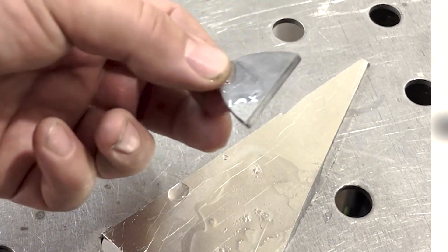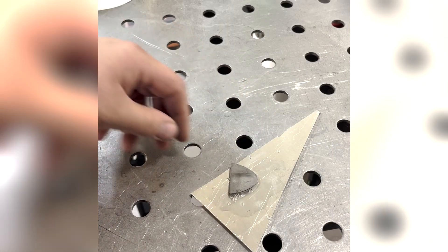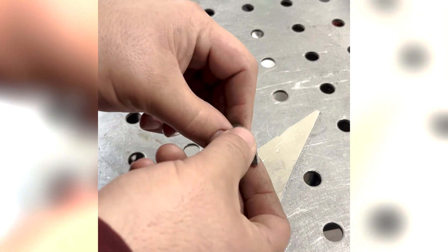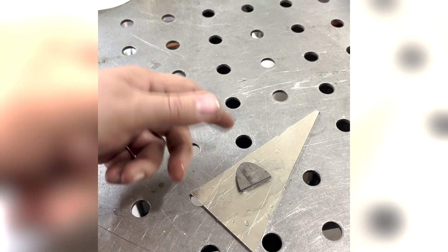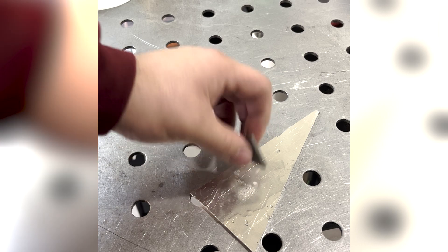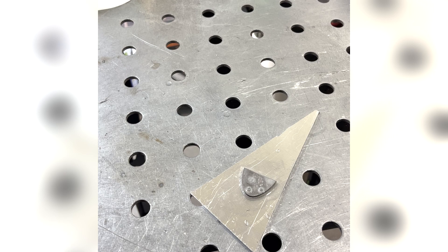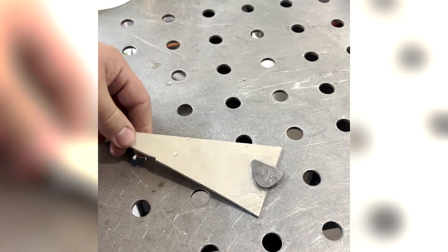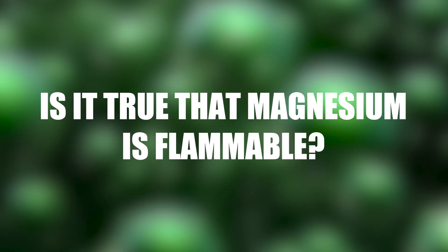Mag will fizz and bubble, aluminum won't - that's the easiest way to check. If you're not able to do that, another way I've done it is actually just take a little shaving off, see if it lights up - it's mag. If it doesn't, for the most part it's aluminum. But depending on the grade of mag, you might get some that's a little more flammable than others.